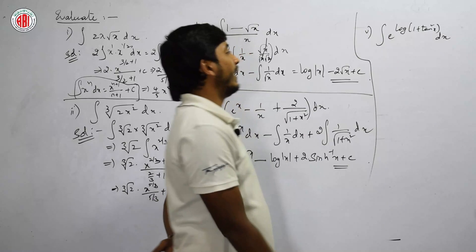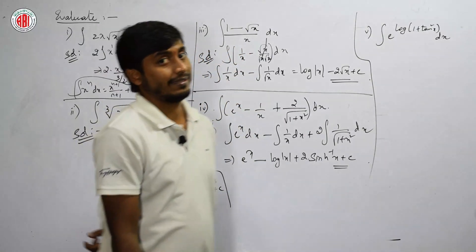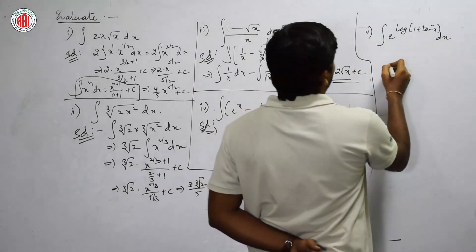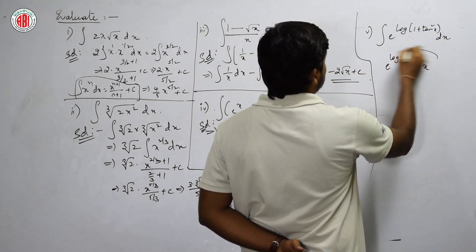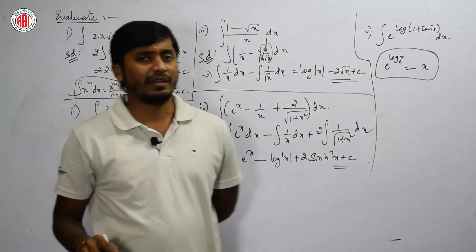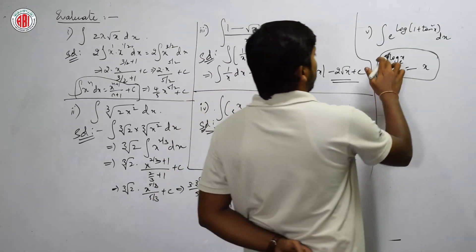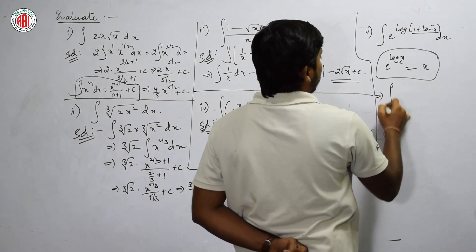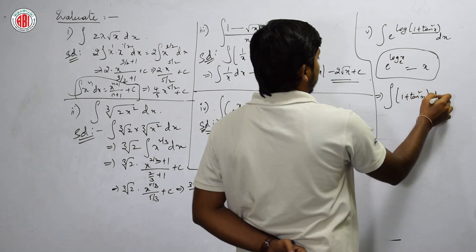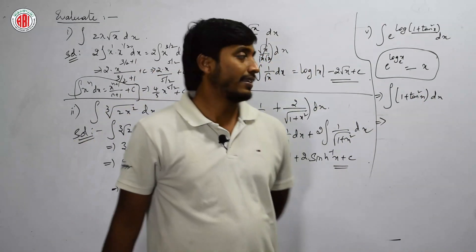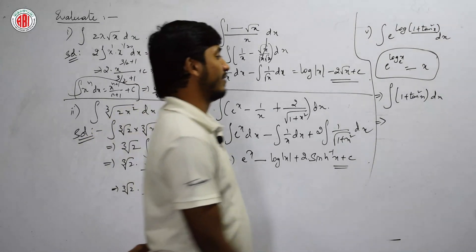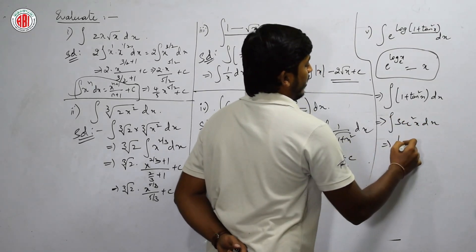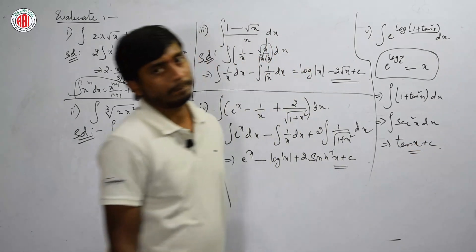Next: ∫e^(log(1+tan²x)) dx. Remember the simple formula: e^(log x) to base e is always x, whatever might be inside the logarithm. So e^(log(1+tan²x)) = 1 + tan²x. What is the integral of 1 + tan²x? Since 1 + tan²x = sec²x, and the integral of sec²x is tan x + c.